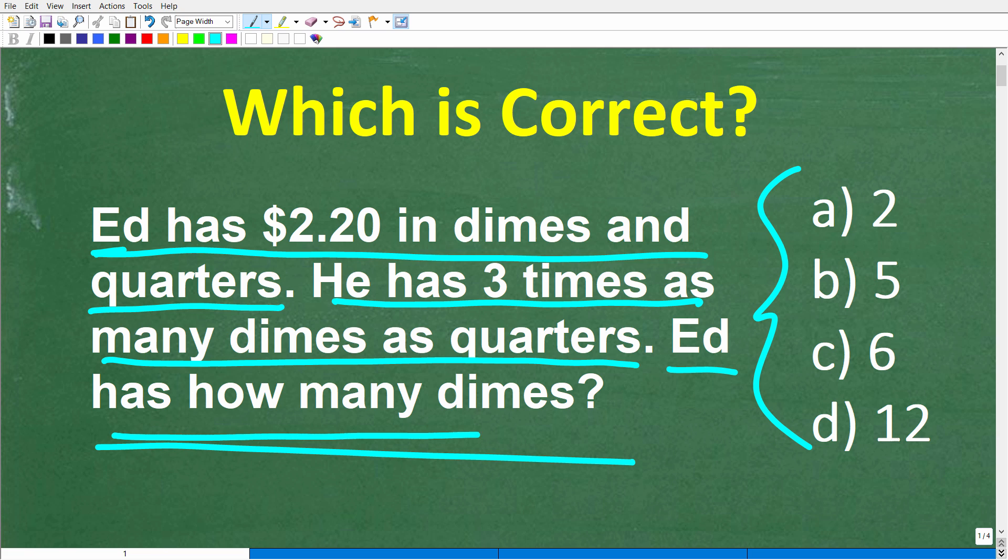This is a multiple choice question. Your choices are A, 2 dimes, B, 5 dimes, C, 6 dimes, or D, 12 dimes.